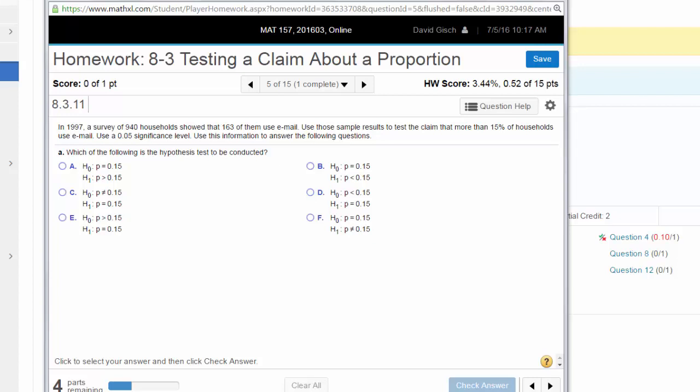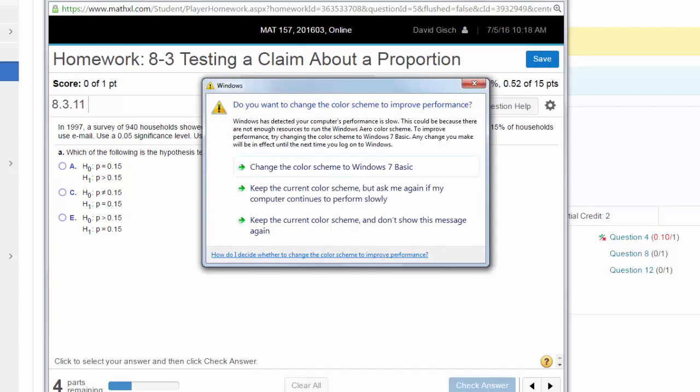One of the hardest parts about hypothesis testing is figuring out what you're doing. In this homework section, it's obvious because all the questions are about a proportion. A big clue here, you have a total of 940 households, 163 of them use email. That's 163 of 940. That's a proportion. A proportion is going to give you a percentage. That's how you're definitely going to know.